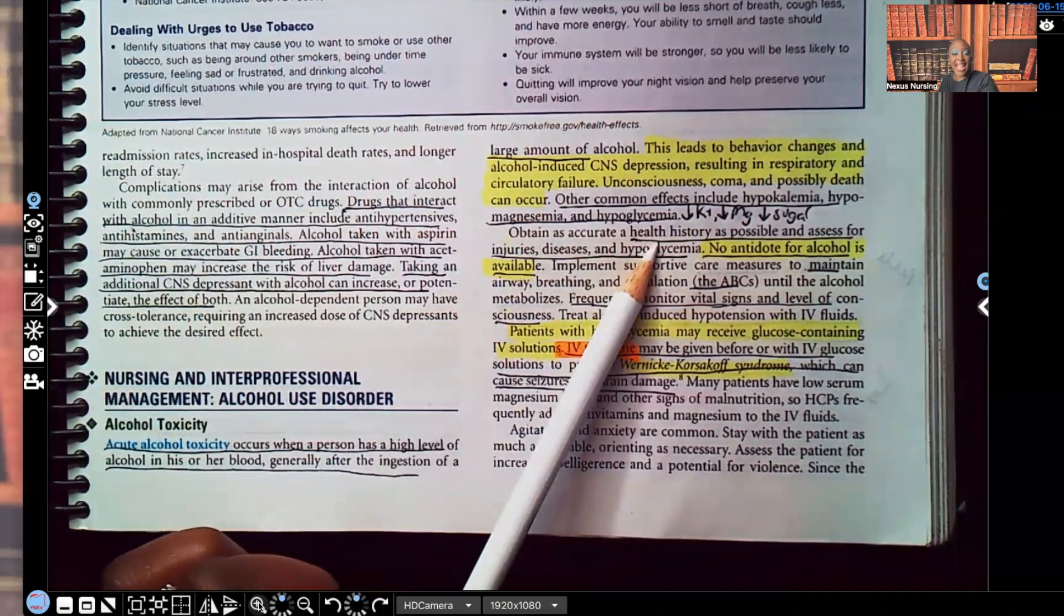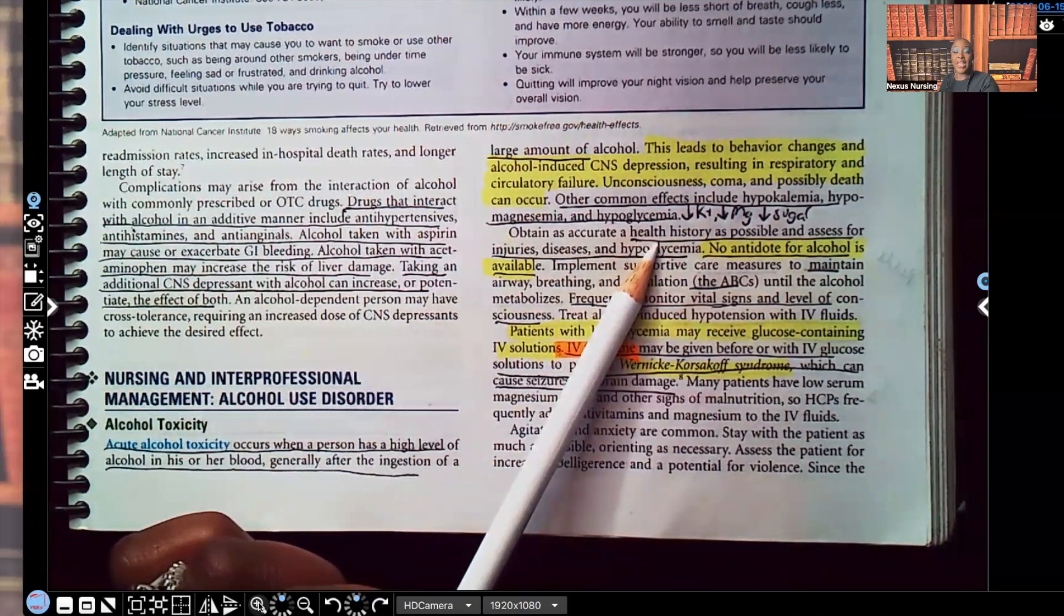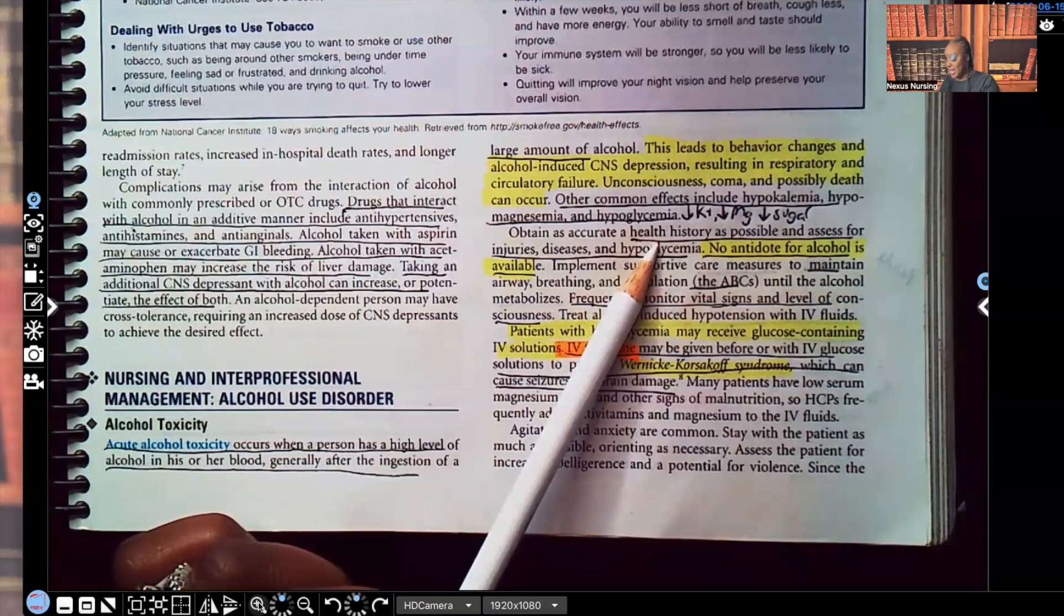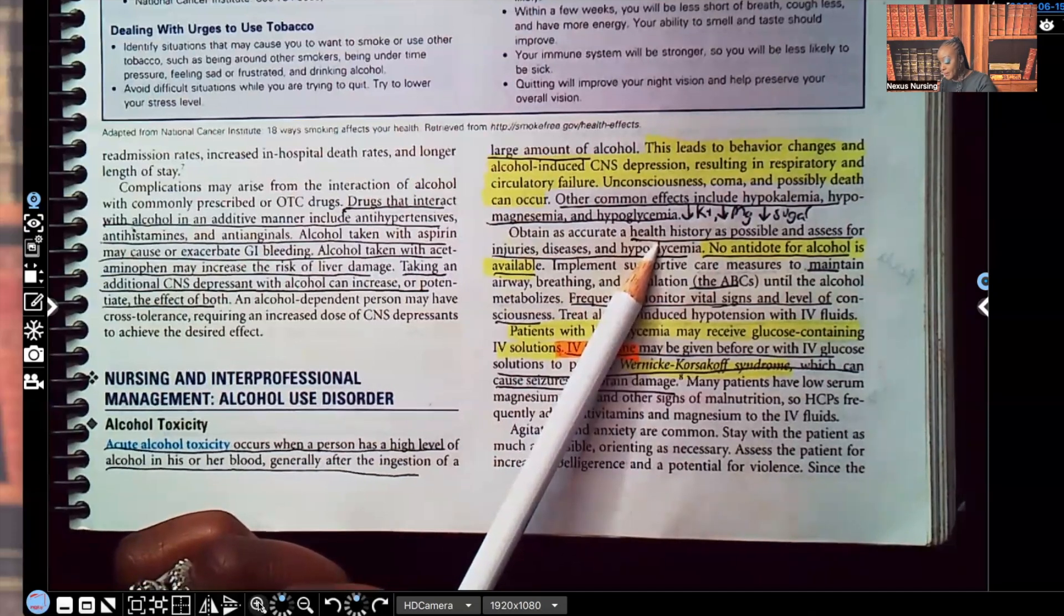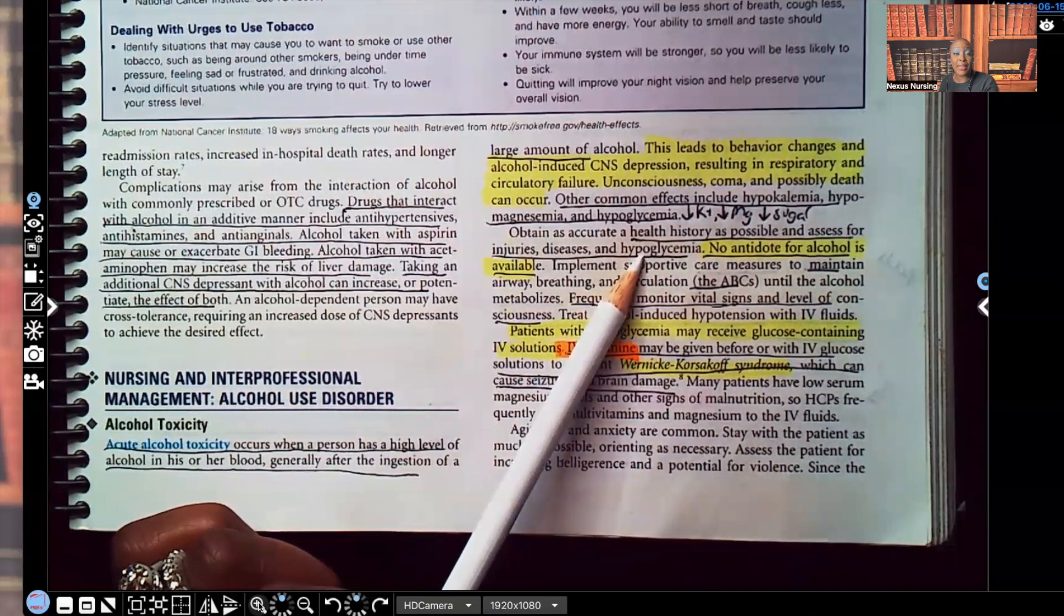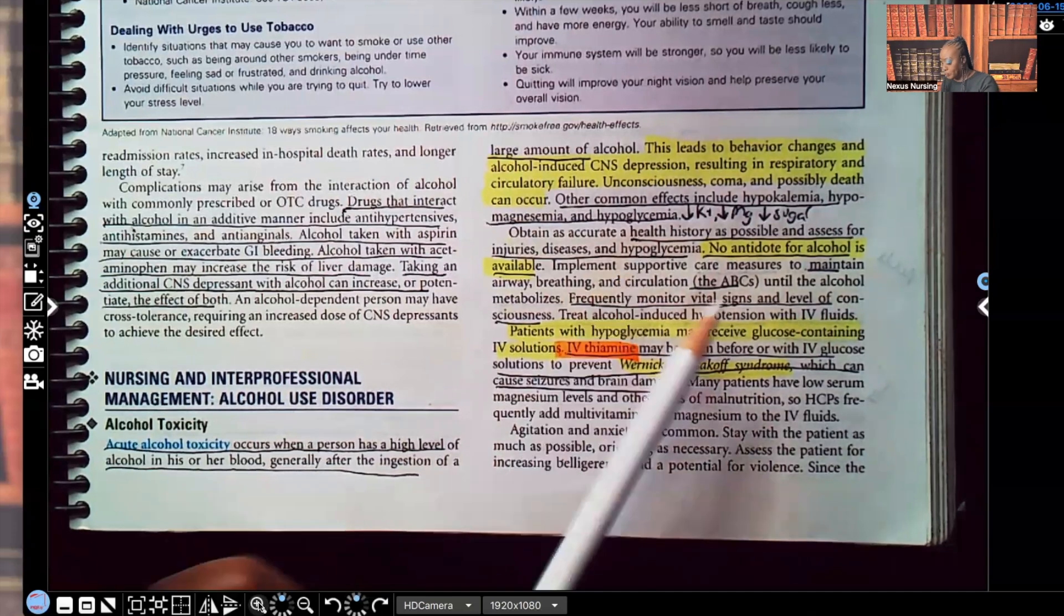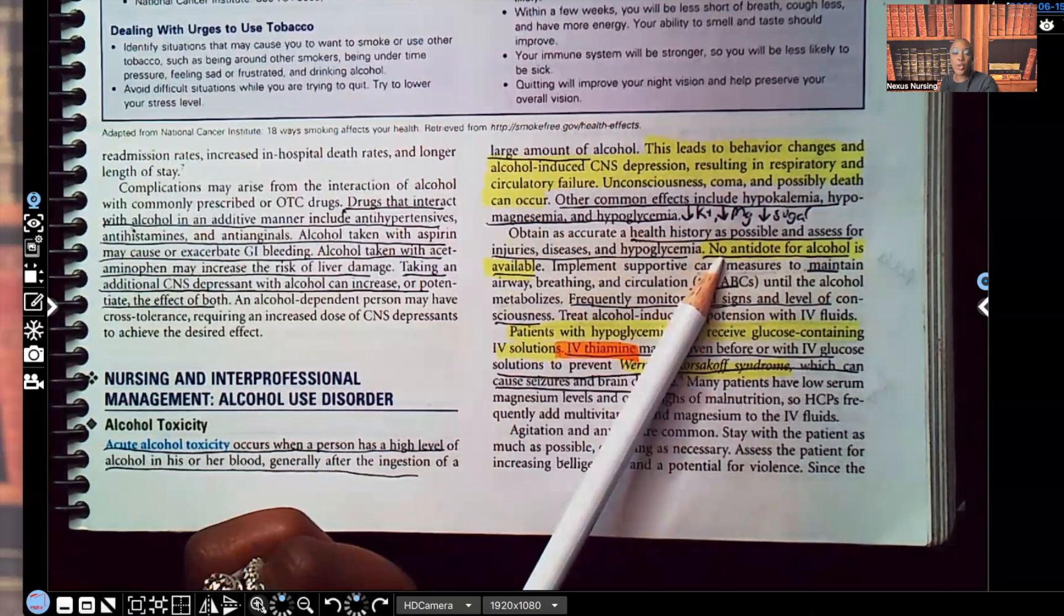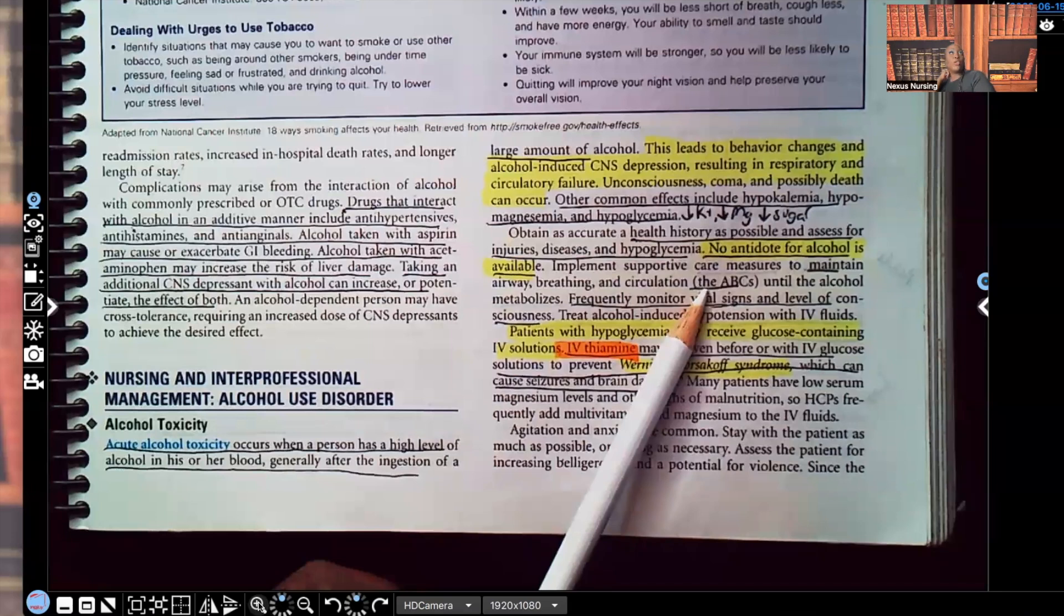You're going to do a health history. You're going to get it as accurately as possible. Remember, they're going to be drunk, but you're going to try to get it as accurately as possible. If they come in and they have a family member or friend with them, try to get as much information as you can. You're going to assess them for injuries, diseases, and hypoglycemia. That is very important because hypoglycemia will kill someone very quickly. Look at this. There's no antidote for alcohol or alcohol intoxication. They actually have to just wait it out, let it pass through their system. There is no antidote.